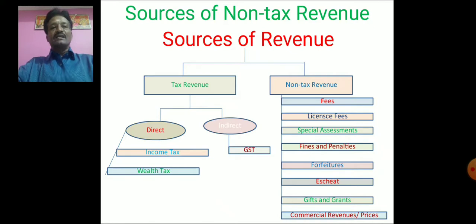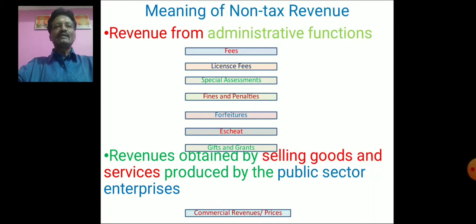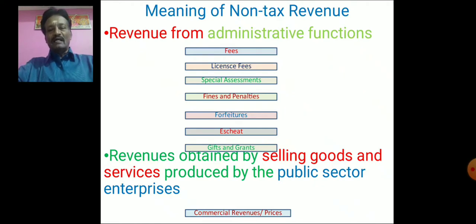Non-tax revenue comes from administrative functions — including fees, license fees, special assessments, fines and penalties, forfeitures, estates, and gifts and grants — as well as from commercial revenue. Many public sector enterprises are run by the government; they produce goods and services, sell them in the market, and earn profit. Those profits are considered commercial revenue.